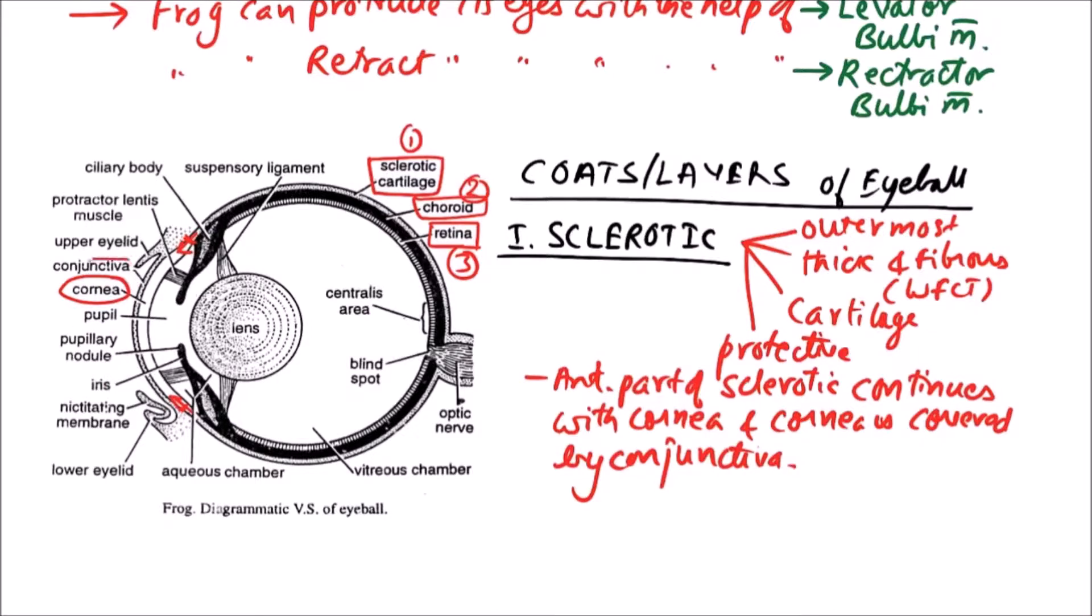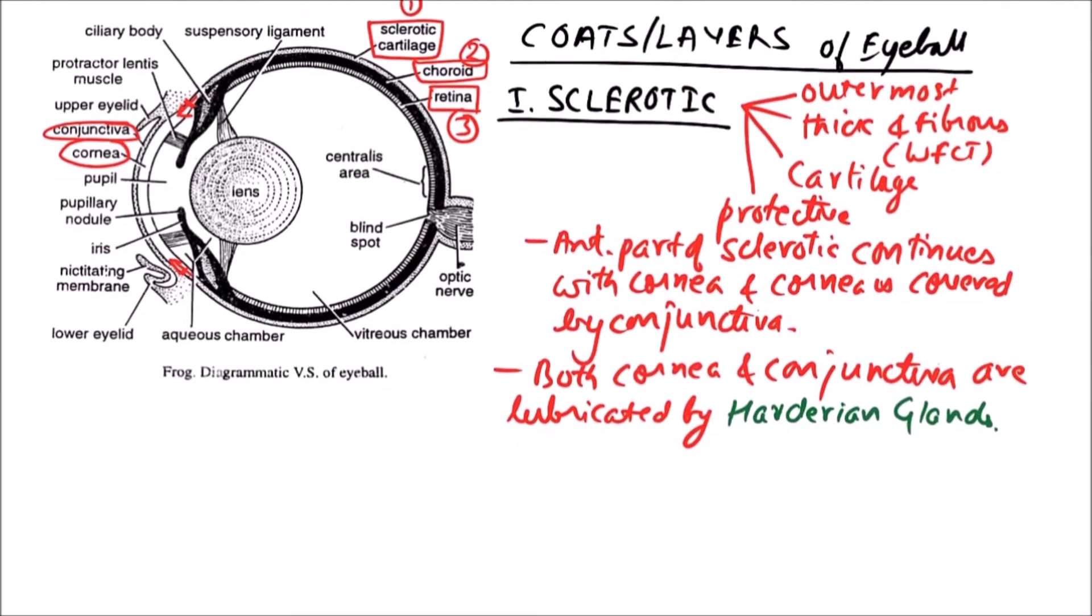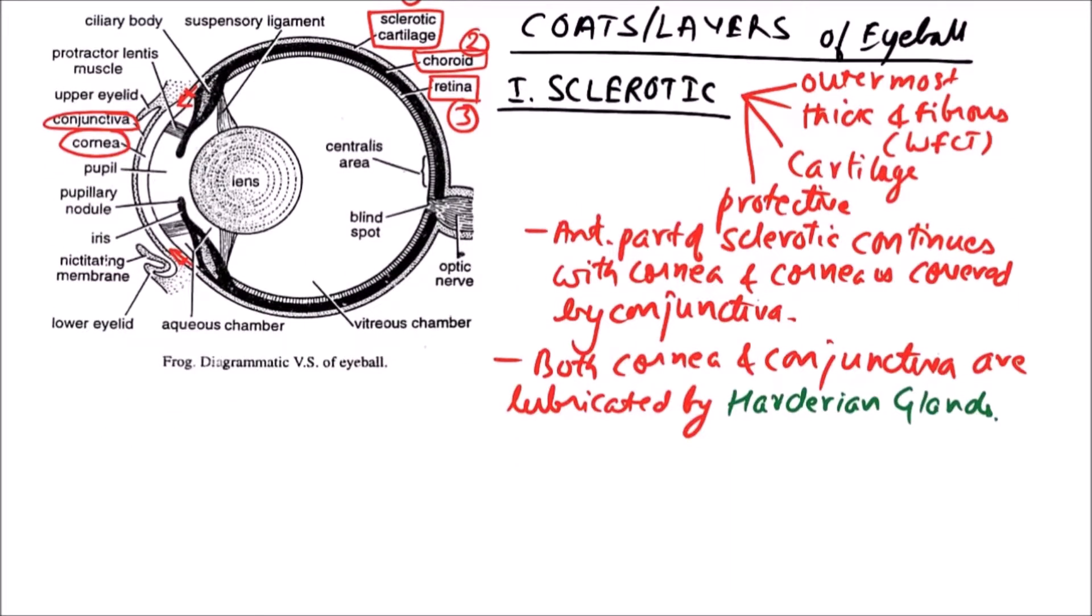We can see that this one is cornea and up to here this is sclera or sclerotic layer which continues anteriorly as cornea. Just above the cornea, conjunctiva is there. Both cornea and conjunctiva are lubricated by hardarian glands. These glands perform the lubrication and are located in the orbit.